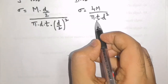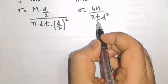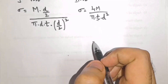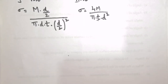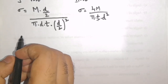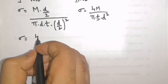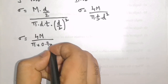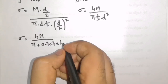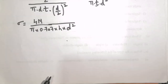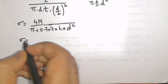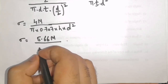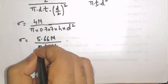This T is the throat of the weld. If I want to convert this into the size of the weld, I have to write T is equal to 0.707 H. Substituting the value of T, I will get sigma is equal to 4M divided by pi multiplied by 0.707 H multiplied by D square. On simplifying this, I will get sigma is equal to 5.66 M divided by pi into H into D square.